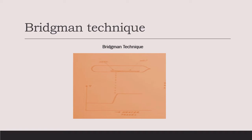This is the total system of the Bridgman technique process. By using this system, a single crystal can be grown. Here we can consider a quartz ampoule, or a quartz tube. The mouth of this quartz tube is sealed. Inside this ampoule we have a quartz boat — this is the quartz boat, this is the outline of the quartz boat.